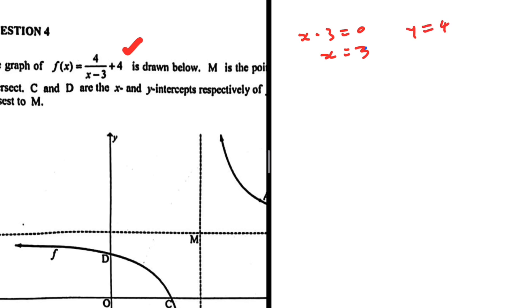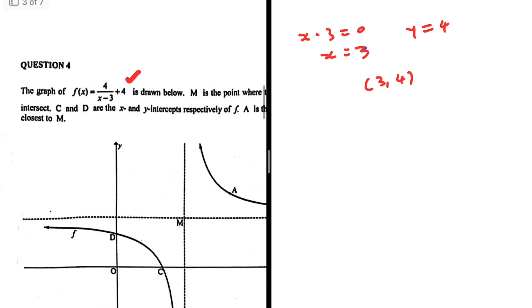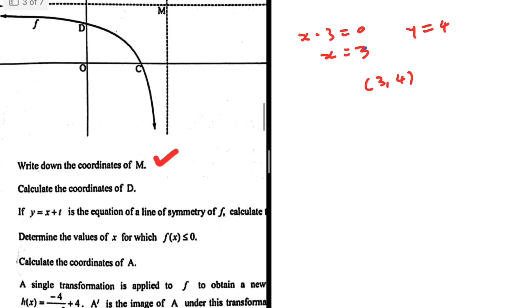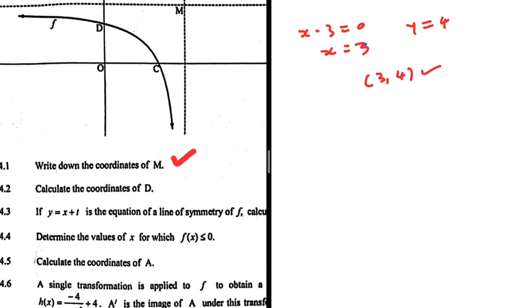So that is one asymptote, and the other asymptote is that y equals 4. So the coordinates of M where the asymptotes meet is 3 and 4 for the x and y value respectively. So that's what we are supposed to write down as the coordinates of M.